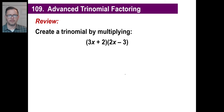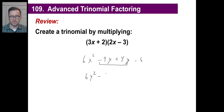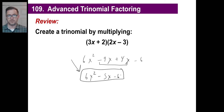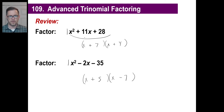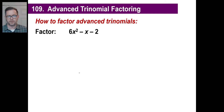We can also make up a trinomial by multiplying. For example: 3 times 2 is 6, x times x is x squared. Then 3x times negative 3 is negative 9x, 2 times 2x is 4x, and 2 times negative 3 is negative 6. Clumping those together gives us 6x squared minus 5x minus 6. We're going to take a trinomial like this and factor it — the difference is there's a number other than 1 in front, so we need to learn a trick.